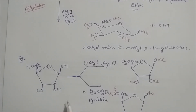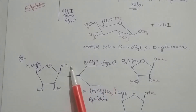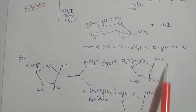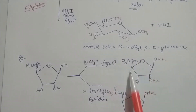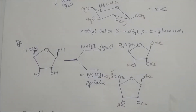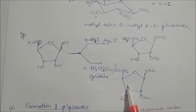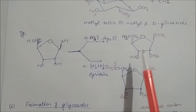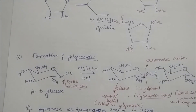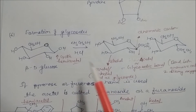An example with arabinose sugar illustrates both reactions. For alkylation of arabinose: hydrogen is removed and methyl groups replace them, forming five ethers. For acylation using acetic anhydride in pyridine: hydrogen is removed and acetyl groups are installed at all four or five hydroxyl positions. This demonstrates acylation and alkylation in a pentose sugar.